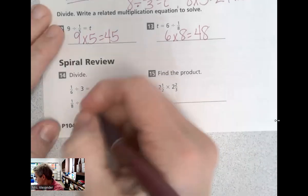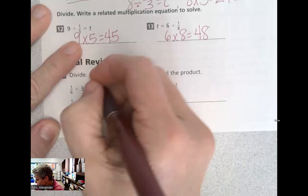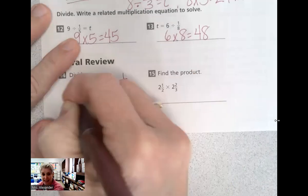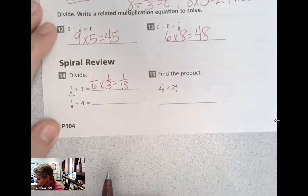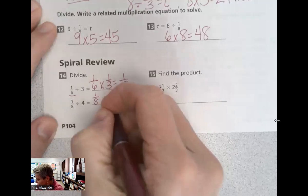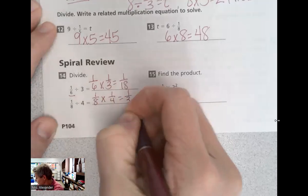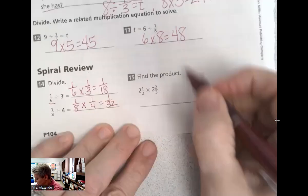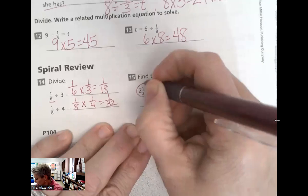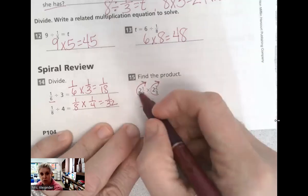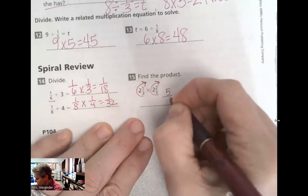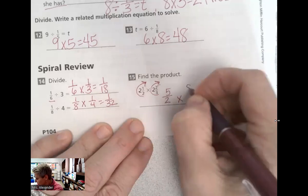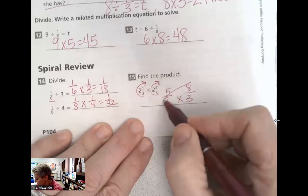All right, if we're going to divide down here for the spiral review, one, six divided by three, we can still do keep, change, flip. Remember, if we start with a fraction, we're going to end with a fraction. Keep, change, flip. There we go. And finally, find the product. Use that Columbia C for each of these. Two times two equals four plus one equals five halves times three times two equals six plus two equals eight thirds.